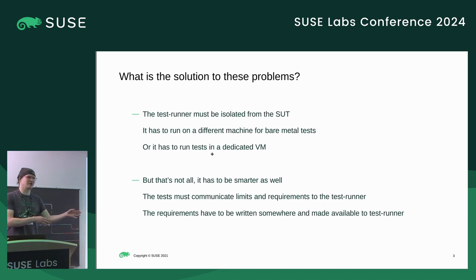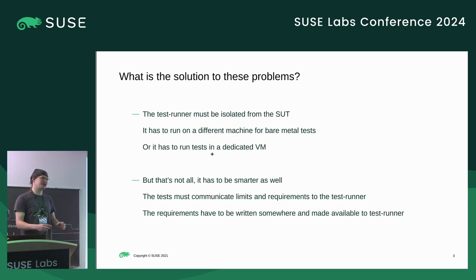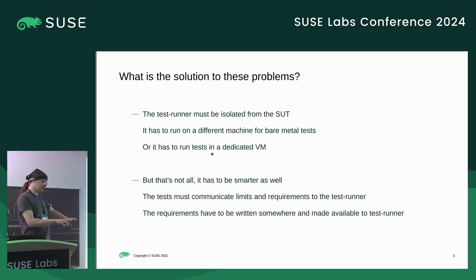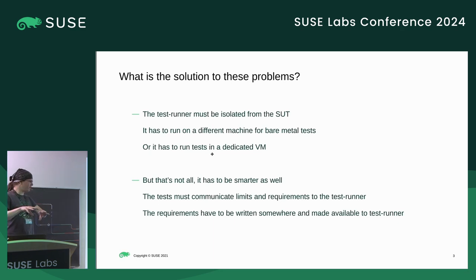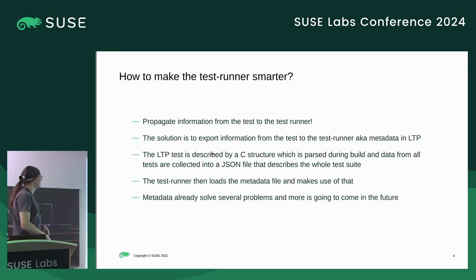For bare metal test cases it's more complicated — you have to talk to a BMC or whatever is there to control the hardware. But that's not all: we also have to make the test runner smarter so it knows what to expect. Currently test cases are treated as black boxes — you have an executable, you run it, and wait for it to finish. We've started working on something that takes requirements and limitations from test cases and stores them in a format readable by the test runner, so the test runner can make much more educated decisions.